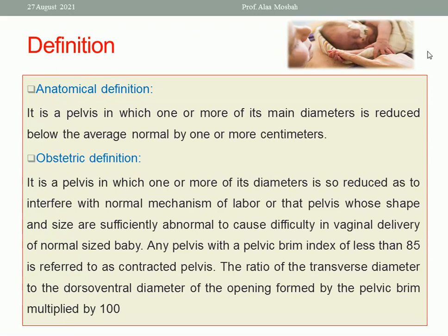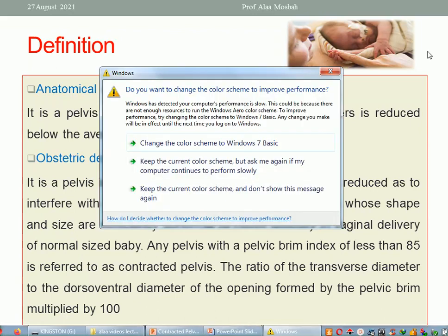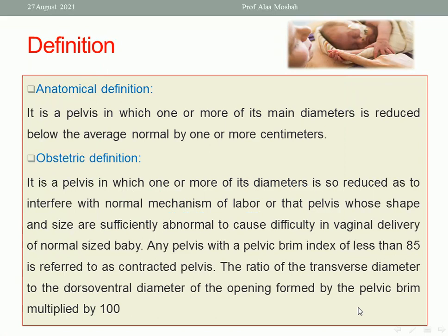Any pelvis with a pelvic brim index of less than 85 is referred to as contracted pelvis. The pelvic brim index is the ratio of the transverse diameter to the dorsoventral diameter of the opening formed by the pelvic brim, multiplied by 100.